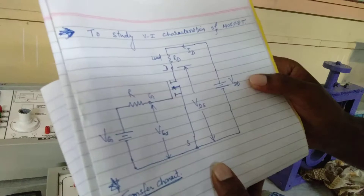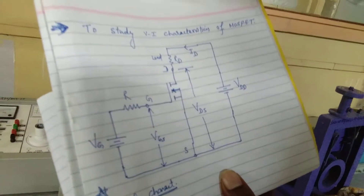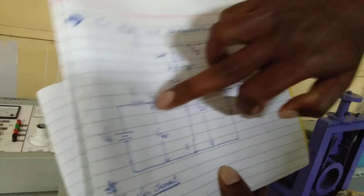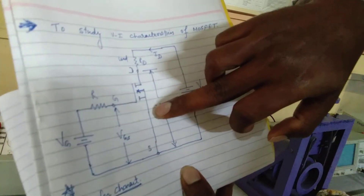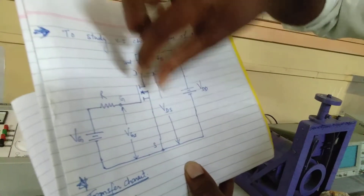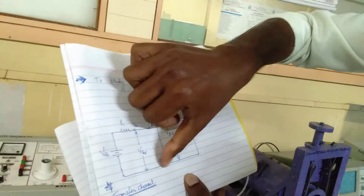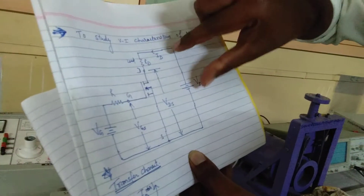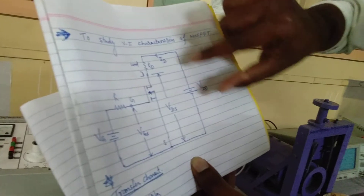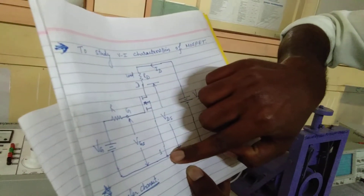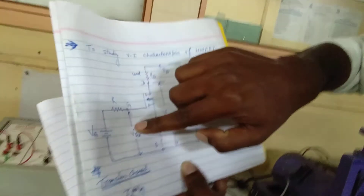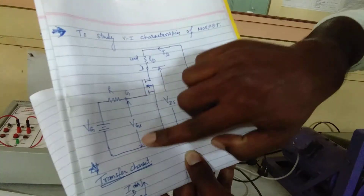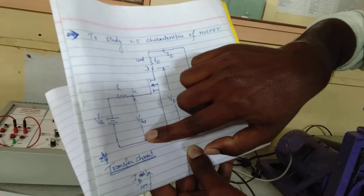This is the circuit diagram for performing the VI characteristics of the MOSFET. The MOSFET has three terminals: gate, drain, and source. To get the output characteristics, we have to give supply voltage across the gate and source — that is VGS — as well as across the drain and source terminal — that is VDS, also called VDD.